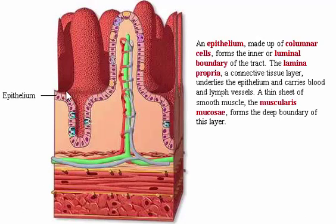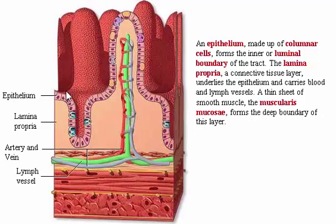An epithelium made up of columnar cells forms the inner or luminal boundary of the tract. The lamina propria, a connective tissue layer, underlies the epithelium and carries blood and lymph vessels. A thin sheet of smooth muscle, the muscularis mucosae, forms the deep boundary of this layer.